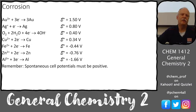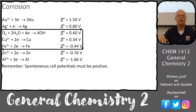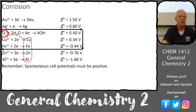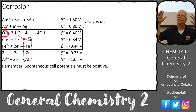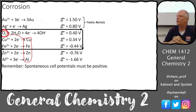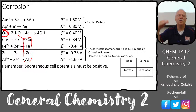Let's talk about corrosion — the enemy of everything we build. In the reduction potential table sorted high to low, clockwise reactions are spontaneous. Oxygen sits in the middle of the table, so it will spontaneously attack all metals below it. Metals above oxygen — like gold and silver — won't react with it spontaneously. That's why noble metals don't tarnish; gold simply won't react with oxygen and stays shiny.